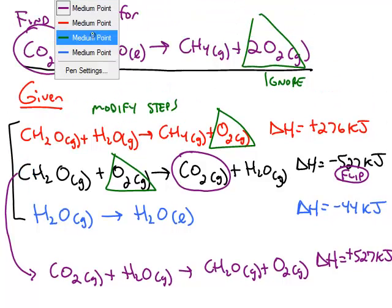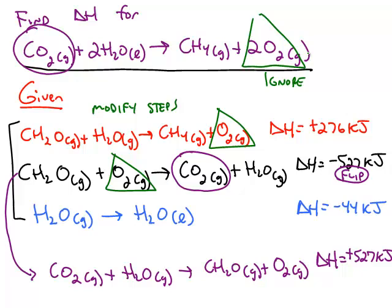Then we want to continue the process to find the chemicals that are going to tell us what to do with step number one and what to do with step number two. So for example, we can take the chemical H2O liquid. The only place it shows up is in step number three.